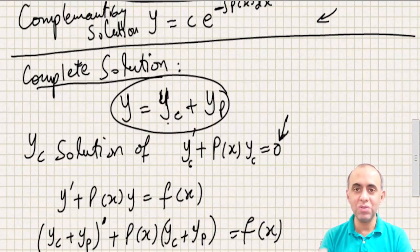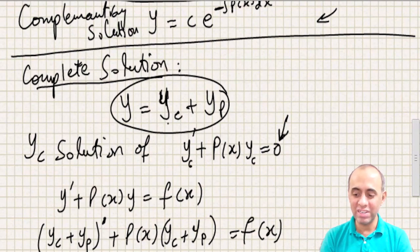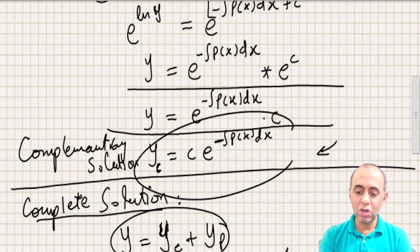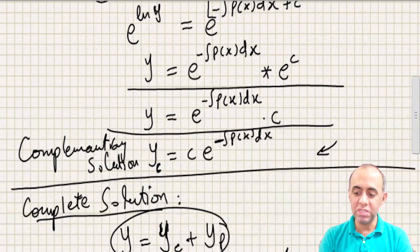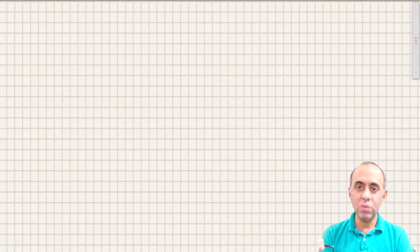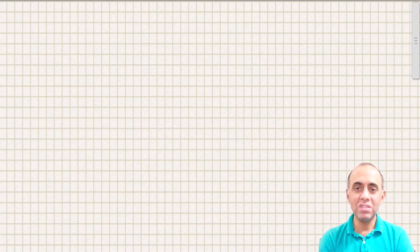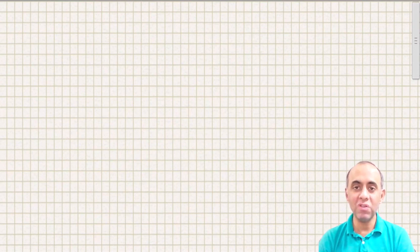So that was a side note proving the validity of the combined solution. Going back to the main development: we have calculated the complementary solution for the non-homogeneous equation. Now, what we try to do is find the value of the particular solution. In most future cases, we are going to use something called variation of parameters.